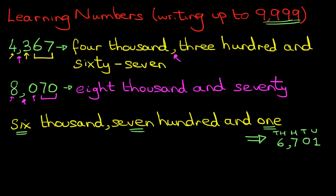There are zero tens. So therefore that number written numerically is 6701. Okay. Let's have a look at one more.